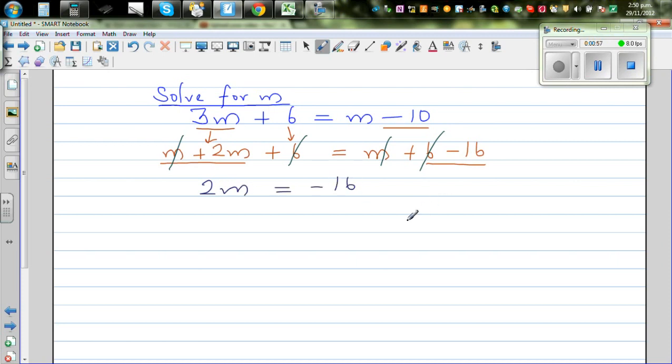If you treat it as two sides of an equation, solving is very easy. This 2m is two lots of m, and negative 16 is negative 8 plus negative 8. Comparing both sides, you can say m equals negative 8.